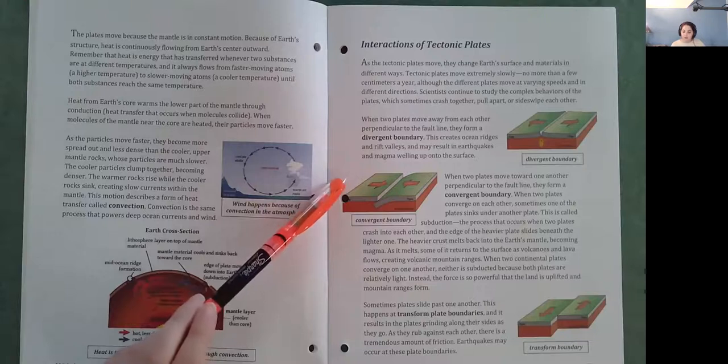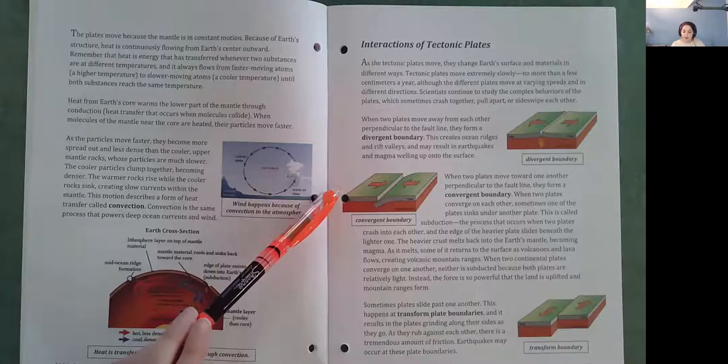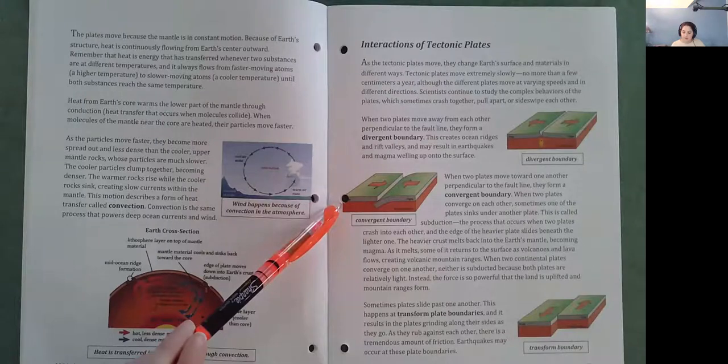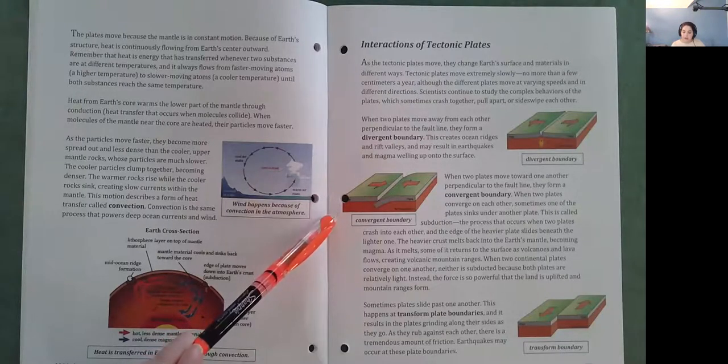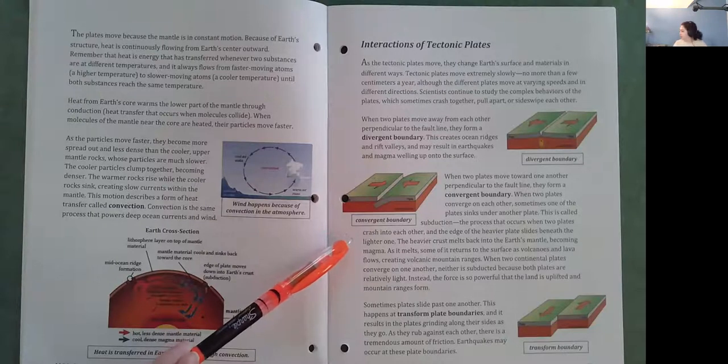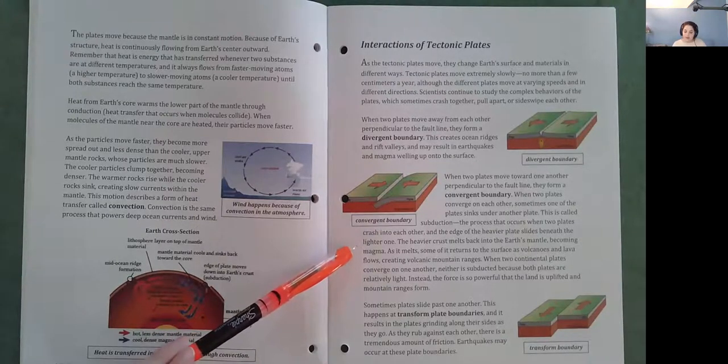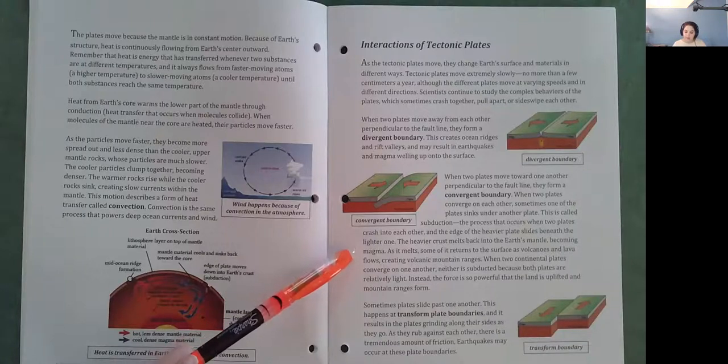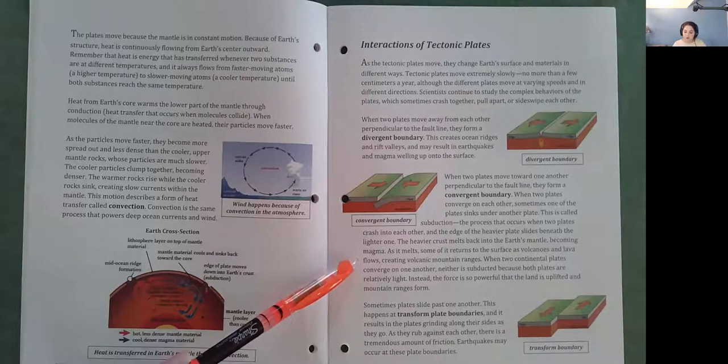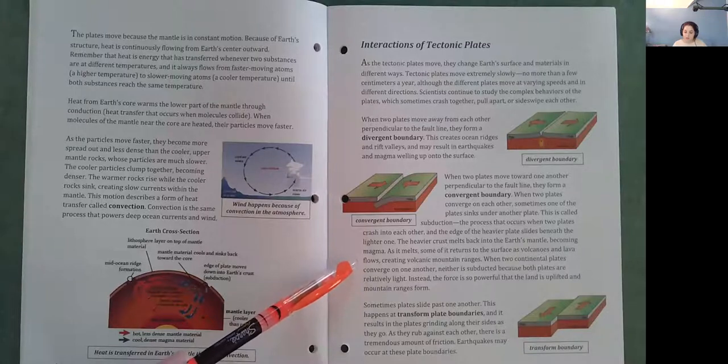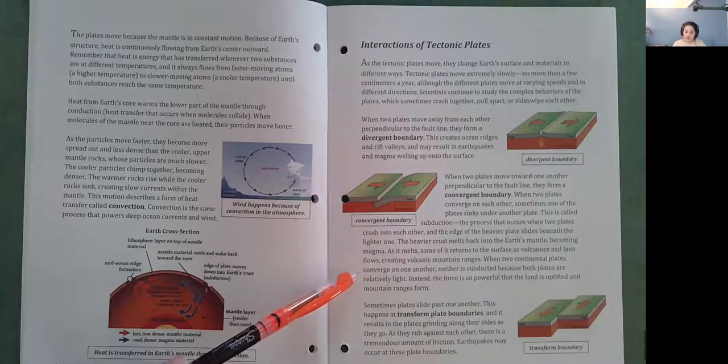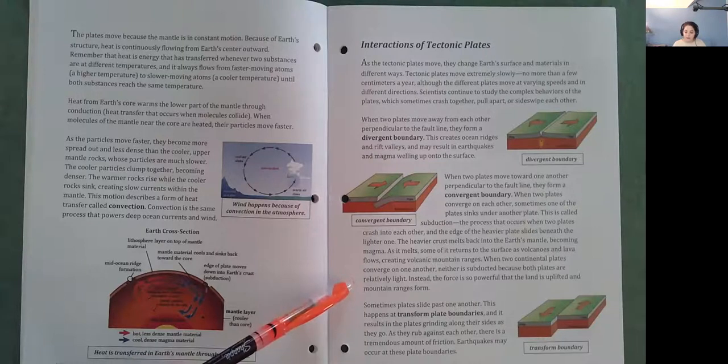When two plates move towards one another, perpendicular to the fault line, they form a convergent boundary. When two plates converge on each other, sometimes one of the plates sinks under another plate. This is called subduction, the process that occurs when two plates crash into each other and the edge of the heavier plate slides beneath the lighter one. The heavier crust melts back into the Earth's mantle, becoming magma. As it melts, some of it returns to the surface as volcanoes and lava flows, creating volcanic mountain ranges. When two continental plates converge on one another, neither is subducted because both plates are relatively light. Instead, the force is so powerful that the land is uplifted and mountain ranges form.